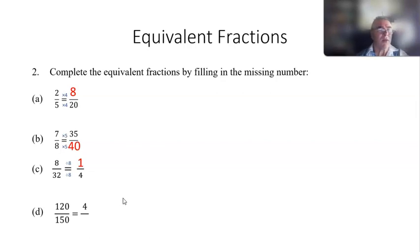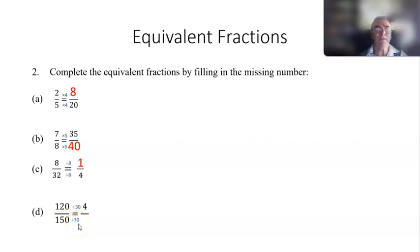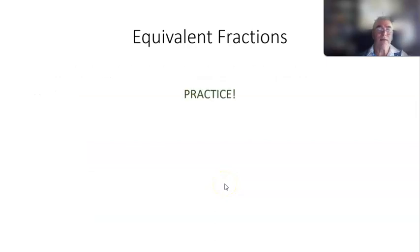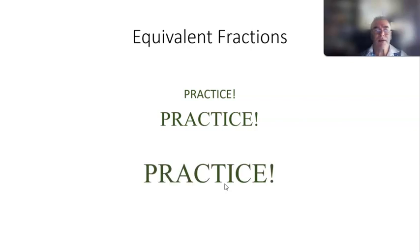One more example: 120 over 150, and this time the numerator is given as 4. To find what we divide 120 by to get 4, we do 120 divided by 4 which gives us 30 — so we're dividing by 30. We do the same with the denominator: 150 divided by 30 gives us 5. So those are some basic examples of equivalent fractions. Go and practice, practice again, and practice some more — the more you practice the easier it's going to become. Thanks for watching!